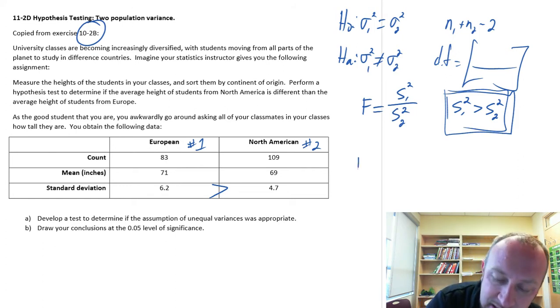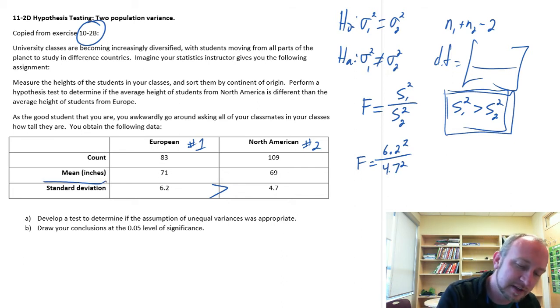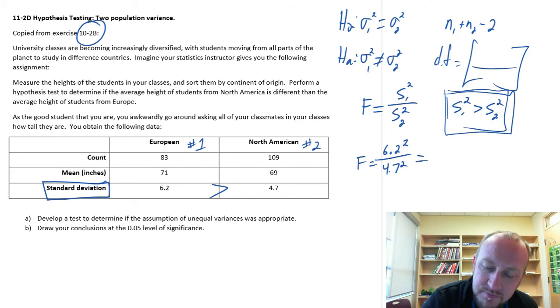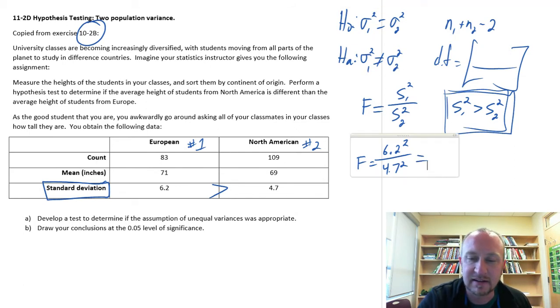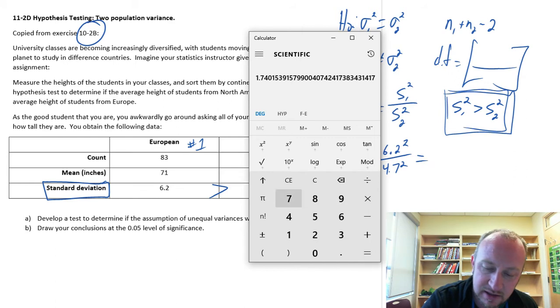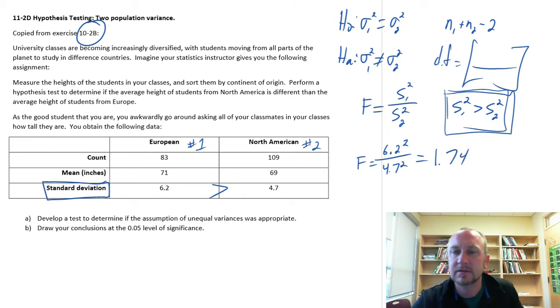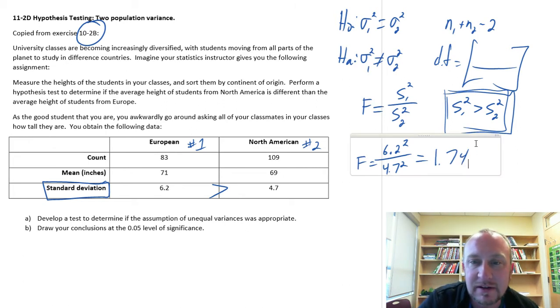When I calculate the F statistic, this is going to be 6.2 squared divided by 4.7 squared, because these are just standard deviations so they have to be squared. This gives us a test statistic of 6.2 squared divided by 4.7 squared equals 1.74. There's our test statistic for this particular exercise.